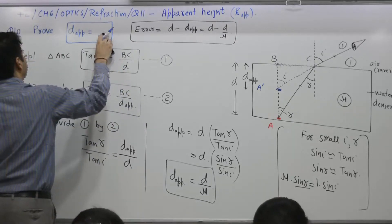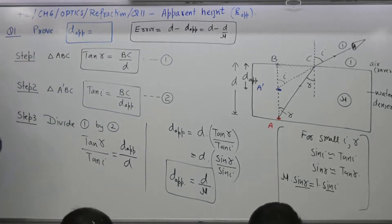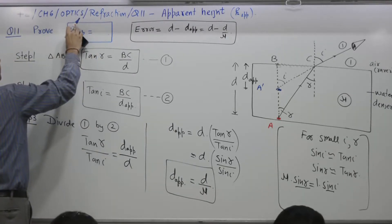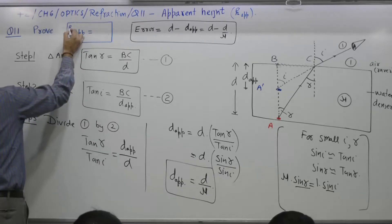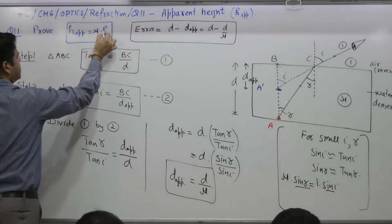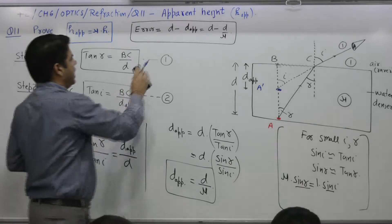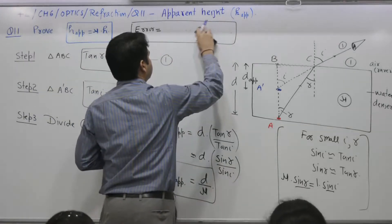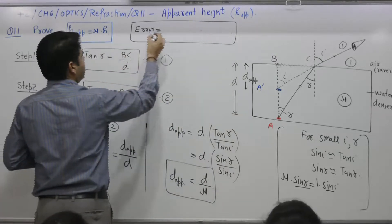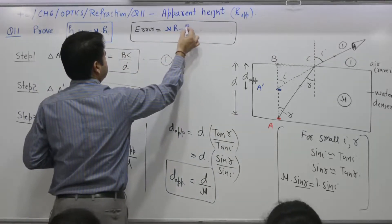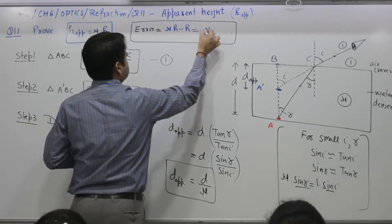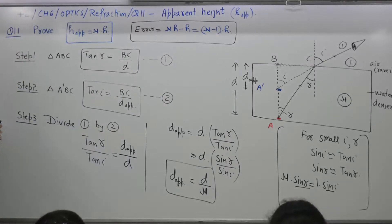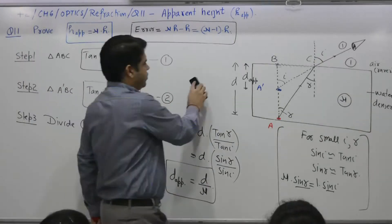In this one, we will prove question number 11: apparent height is equal to nu times H. The error will be equal to nu·H minus H, which equals (nu - 1)·H. Let's see what the diagram looks like.